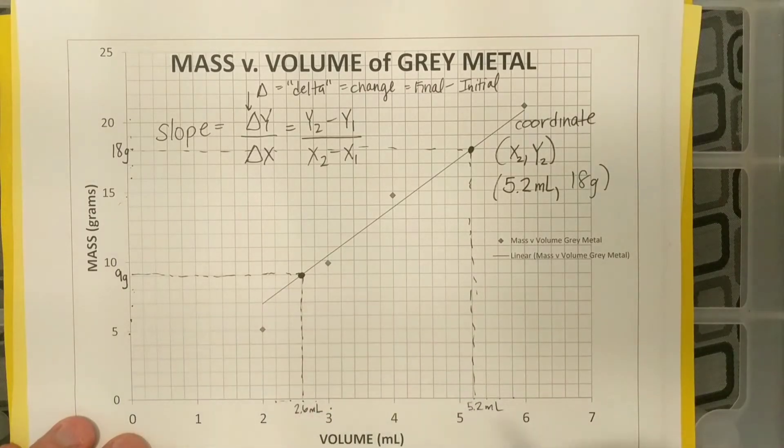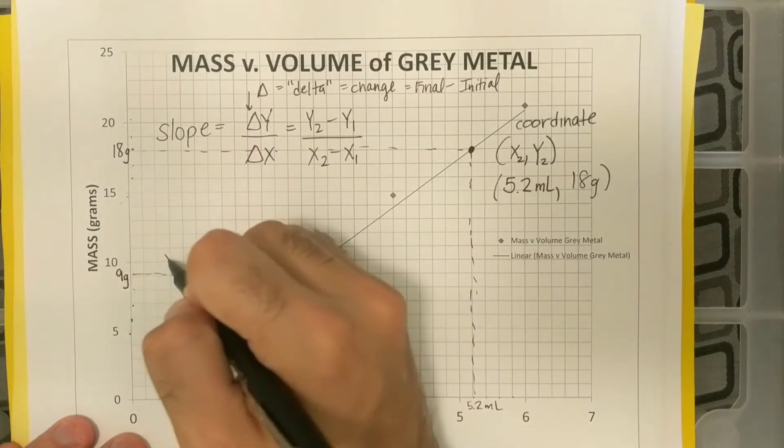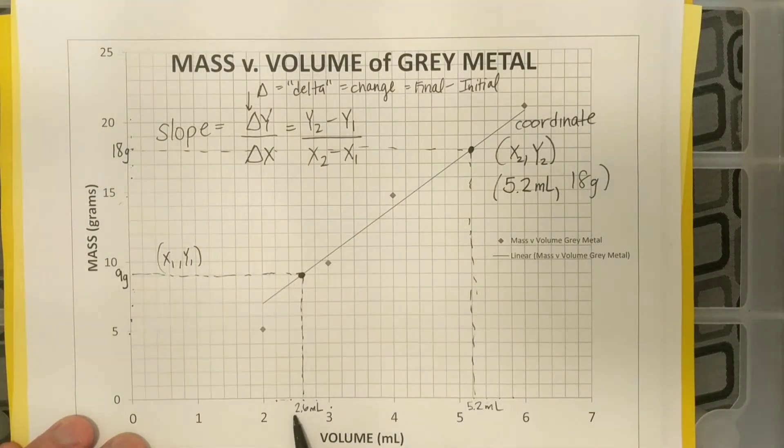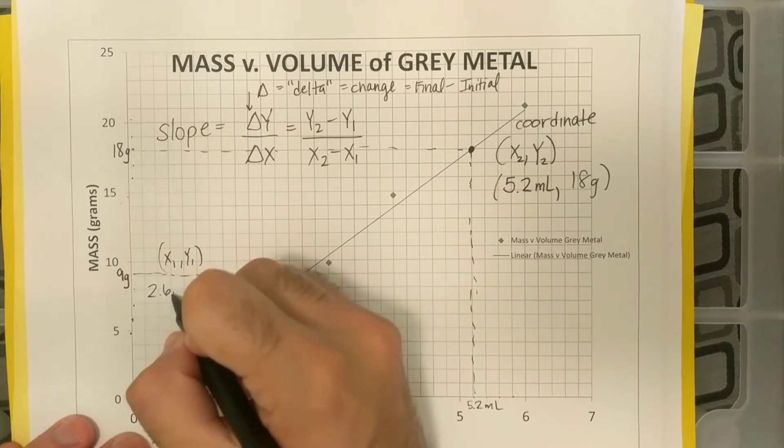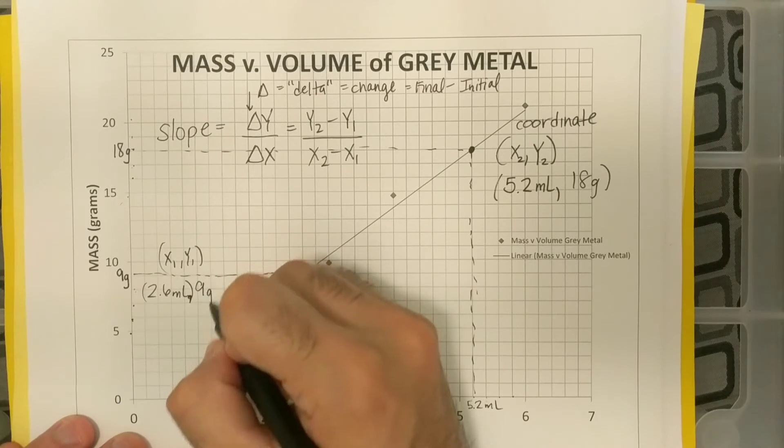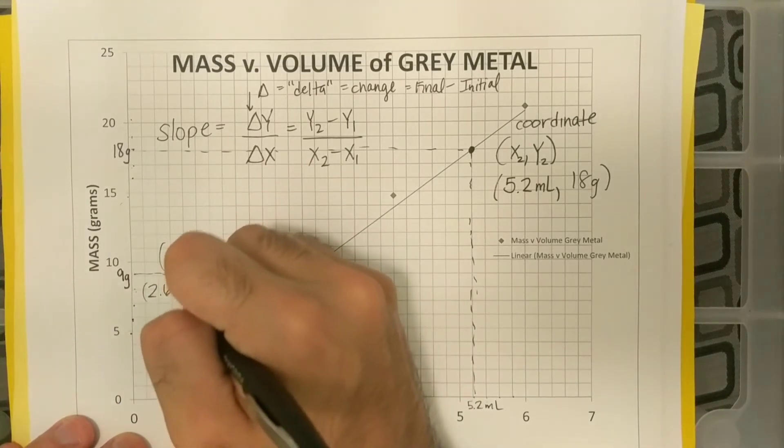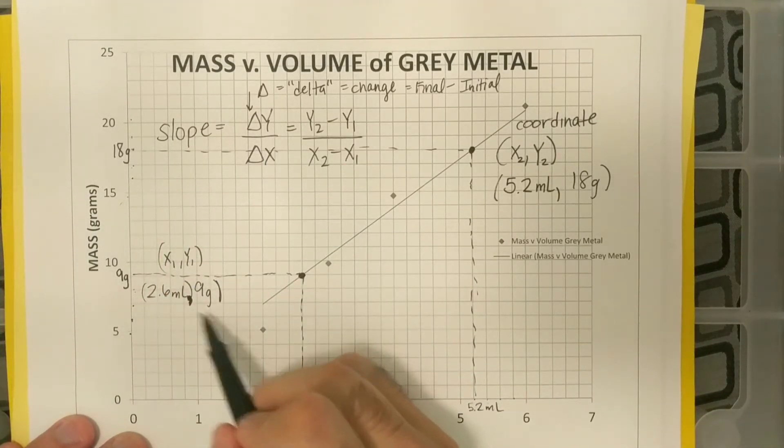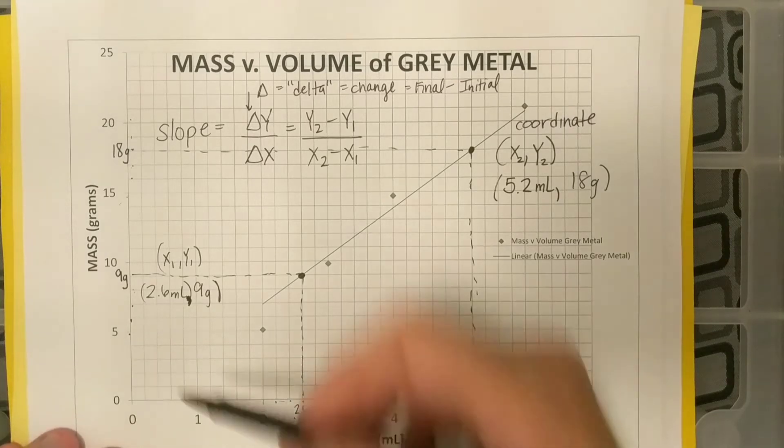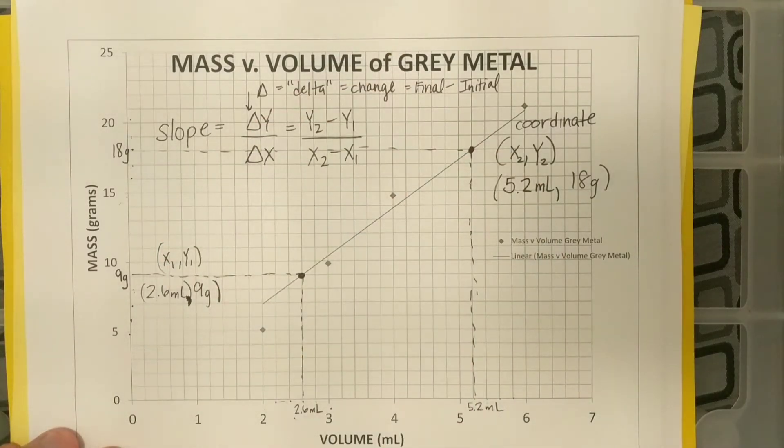All right, and I'm going to write that coordinate down here. Again, we write coordinates as x, y. I'm going to call this x1 and y1. So my x value was 2.6 milliliters, and my y value was 9 grams. Sorry, there's a little typo here. So my x, y values, 2.6 milliliters, because on my x-axis, if you remember, we plotted the milliliters on the x-axis, and then on the y-axis, we plotted grams.